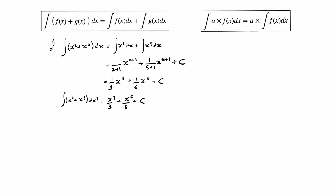Now, let's see how this may work with a quick example. Let's say we're asked to integrate 6x squared. What this formula is telling us is that we can rewrite this integral by taking the 6 outside, meaning we can write that this equals 6 times the integral of x squared dx.